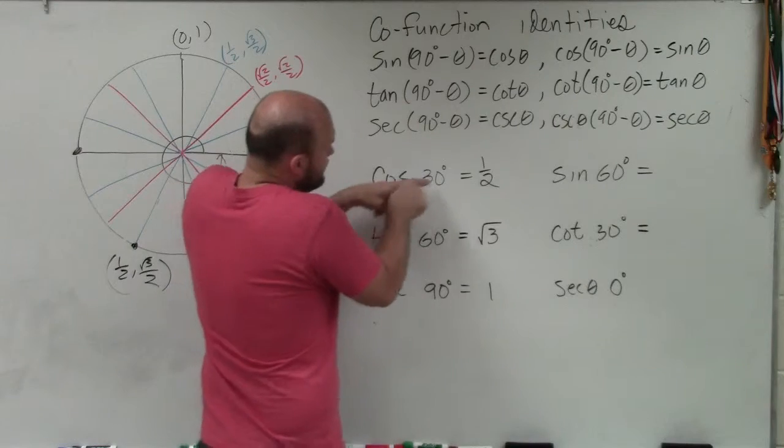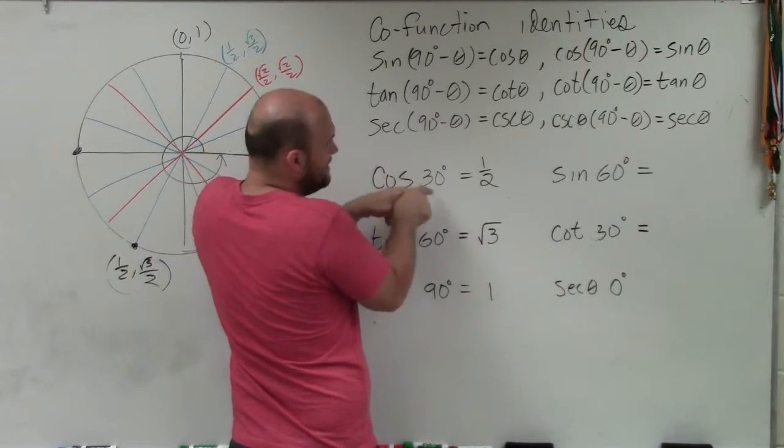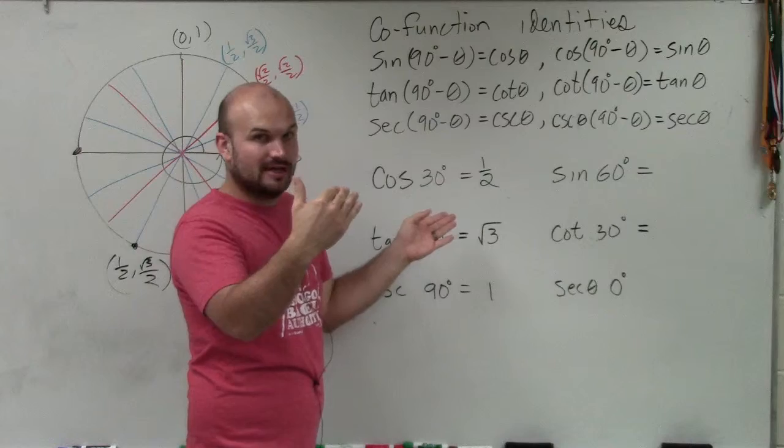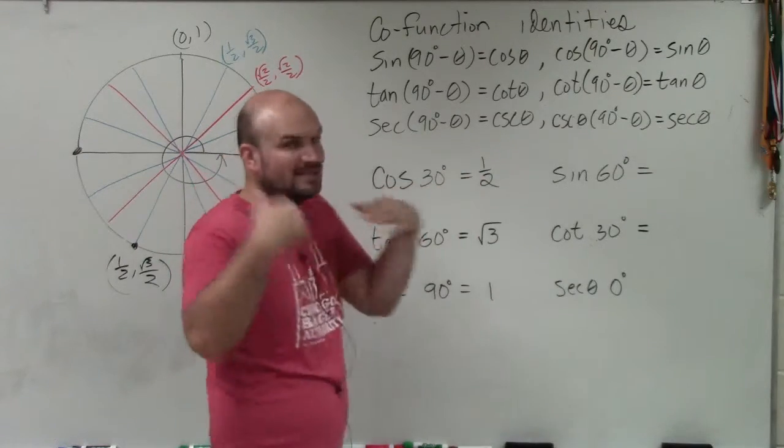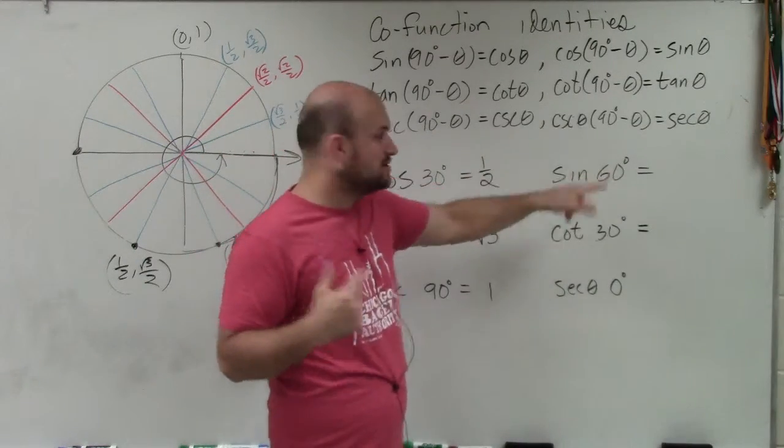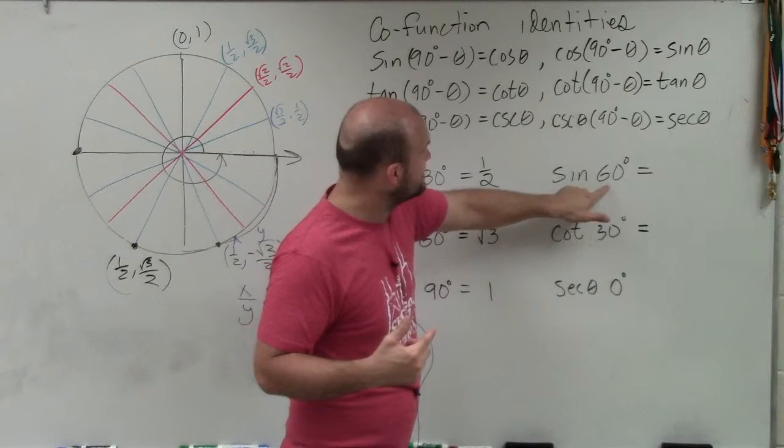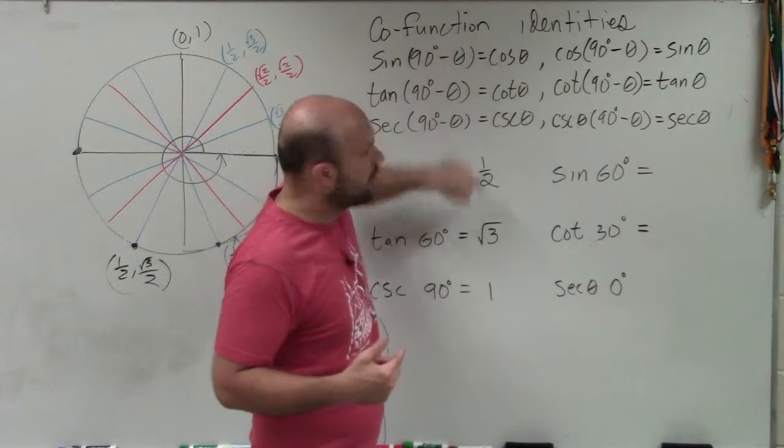Basically what we have is the cosine of 30 degrees. What that means is the sine of 90 minus 30 is going to be the same as that. Well, what's 90 minus 30? 60. So that means the sine of 60 degrees is the same thing as the cosine of 30 degrees.